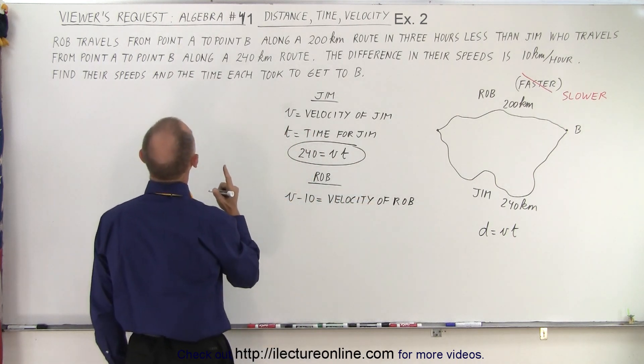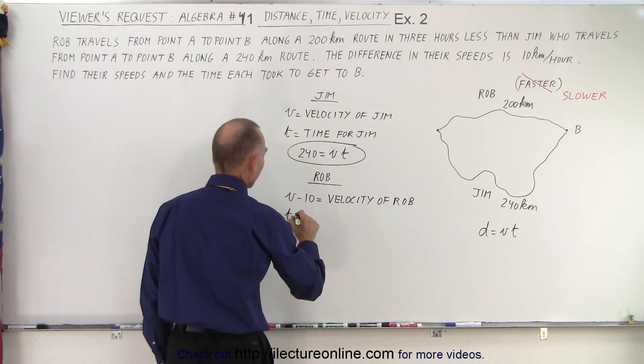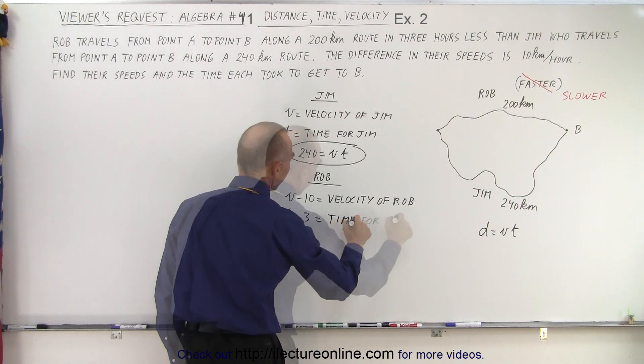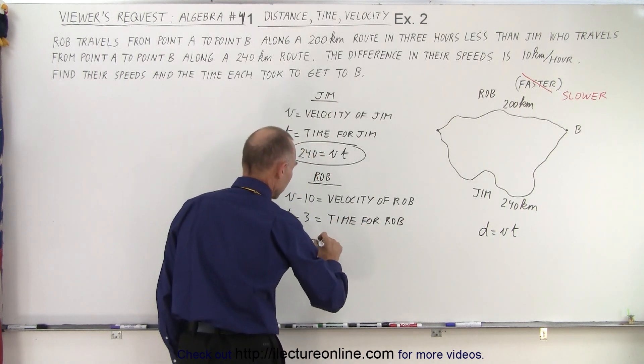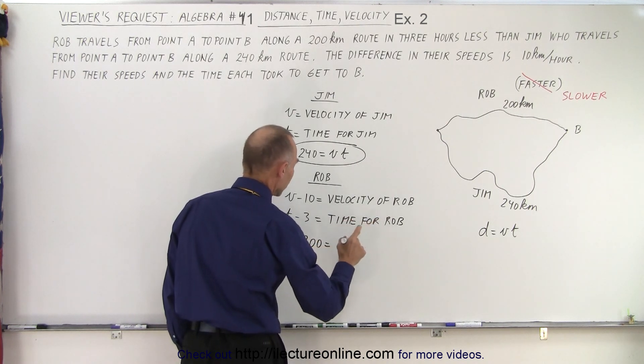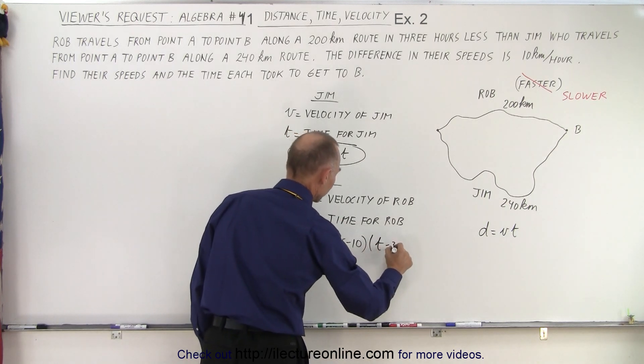But Rob takes 3 hours less time, so T minus 3 is equal to the time for Rob. And then we get the equation: 200 is equal to velocity, which is V minus 10, times the time, which is T minus 3.